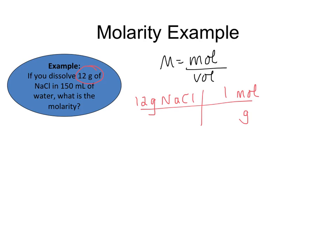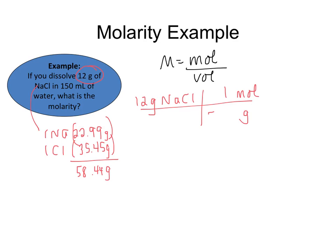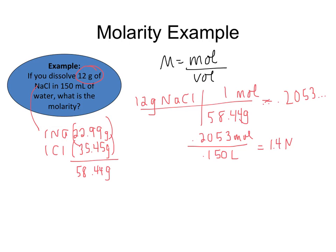One mole is equal to the molar mass. To calculate molar mass of NaCl, we have one sodium at 22.99 grams and one chlorine at 35.45 grams. We add those up to get 58.44 grams per mole. When we divide 12 by 58.44, we get 0.2053 moles. Leave the entire number in your calculator. We're going to divide that by 0.150 liters, and we end up getting a 1.4 molar solution.